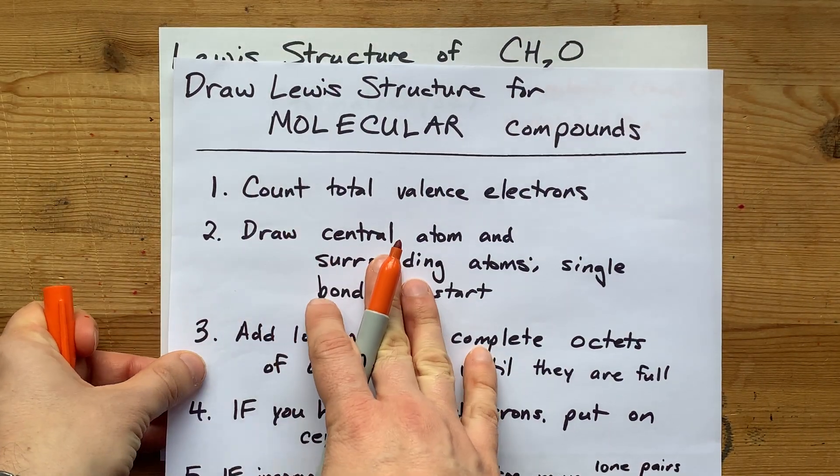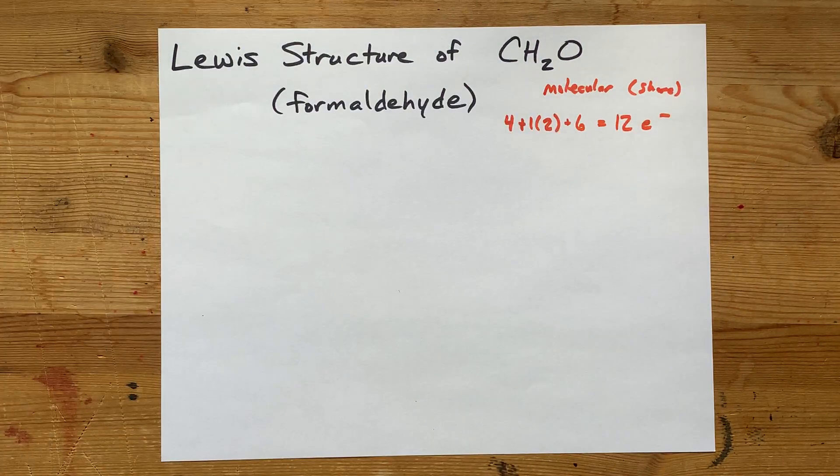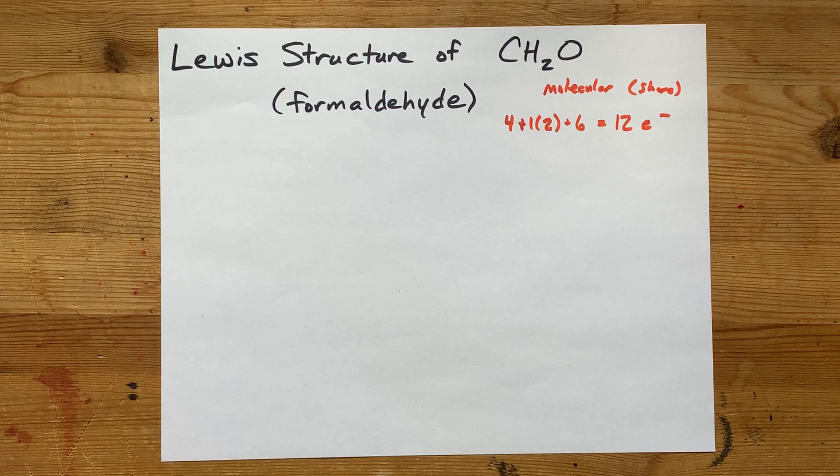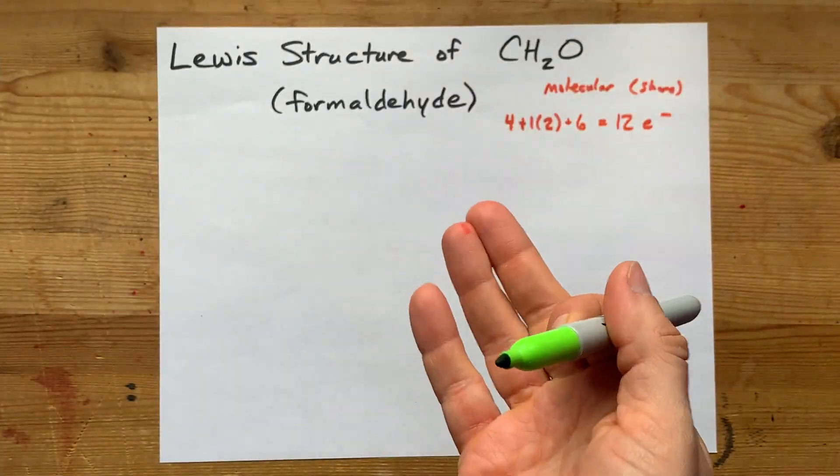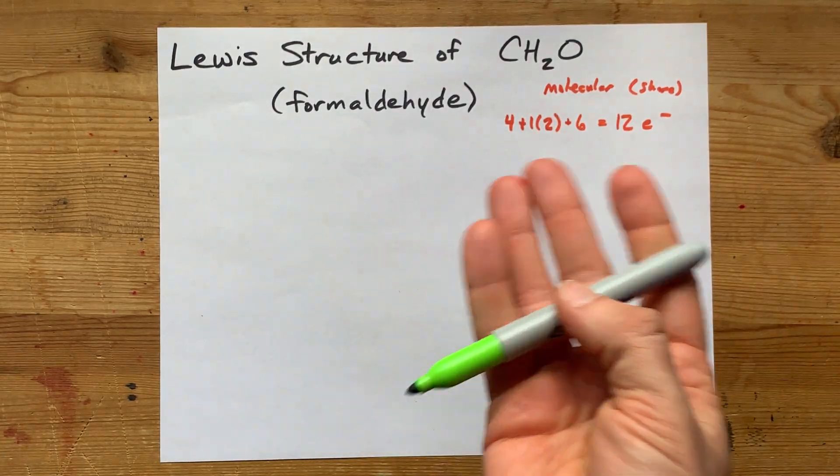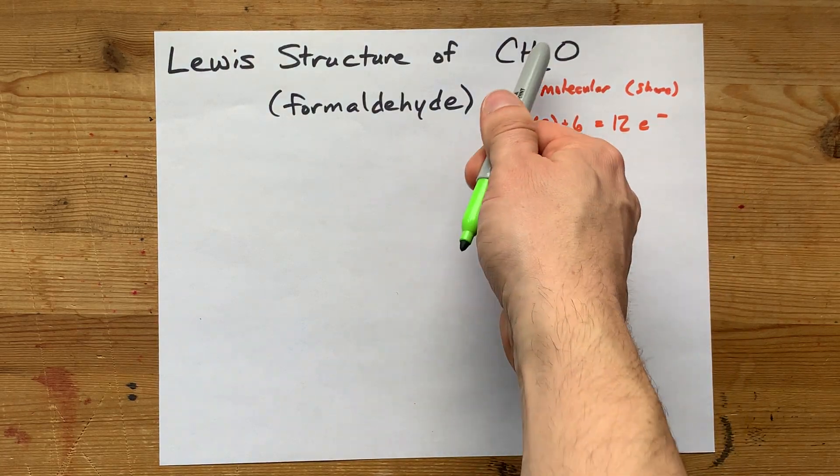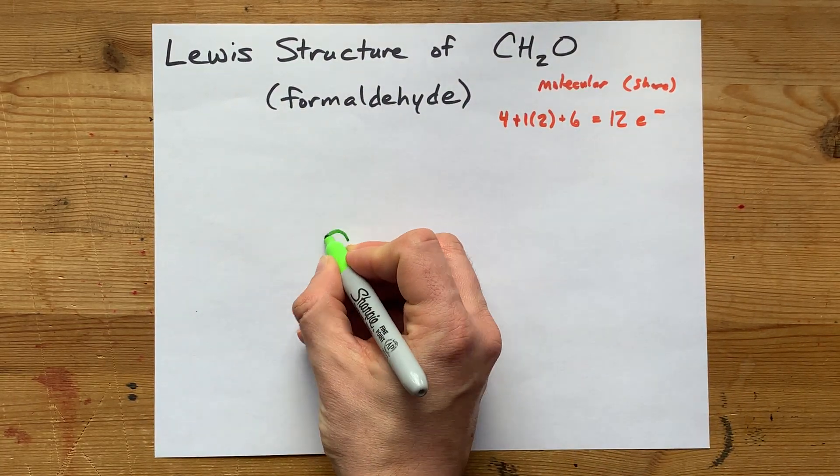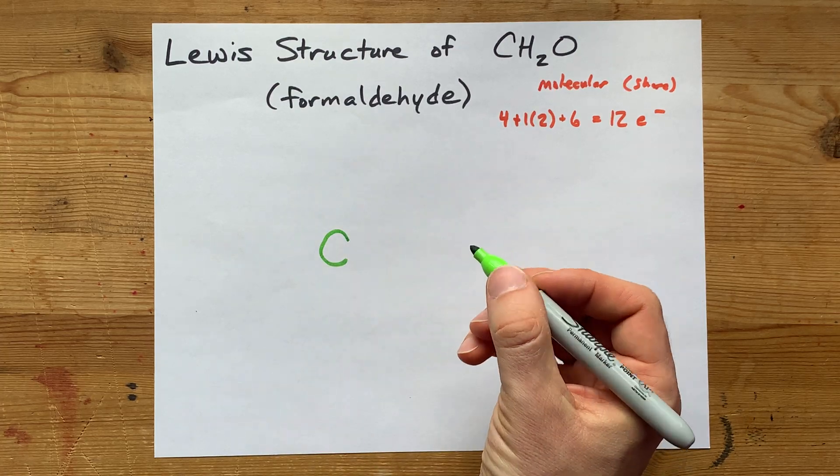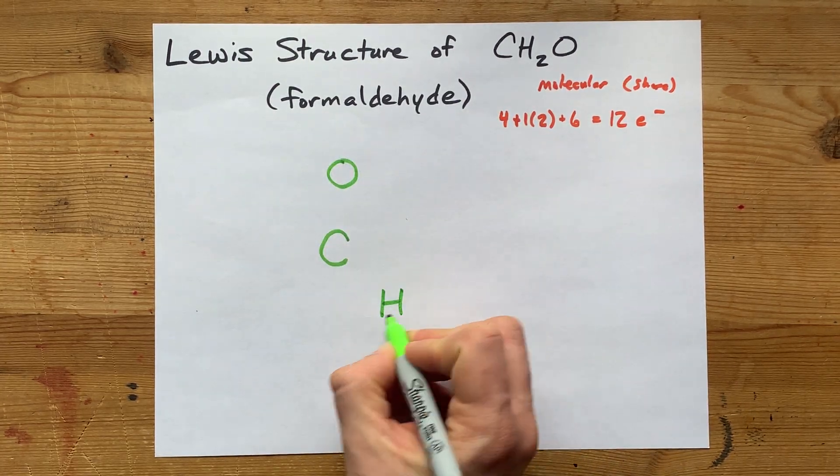I'm going to draw my central atom and the surrounding atoms in single bonds to start with, between all of them. Well, between carbon, hydrogen, and oxygen, carbon is the one that can make the most number of bonds. I've seen it with up to four bonds before. Hydrogen only usually wants one bond, and oxygen is usually just two. So I'm going to put the thing that can bond the most in the center there, and then I'm going to surround it with an oxygen and the two hydrogens.